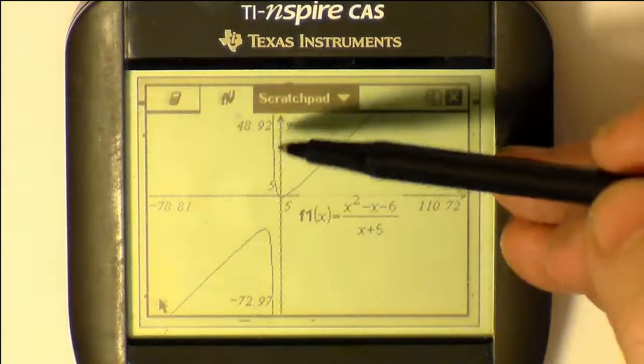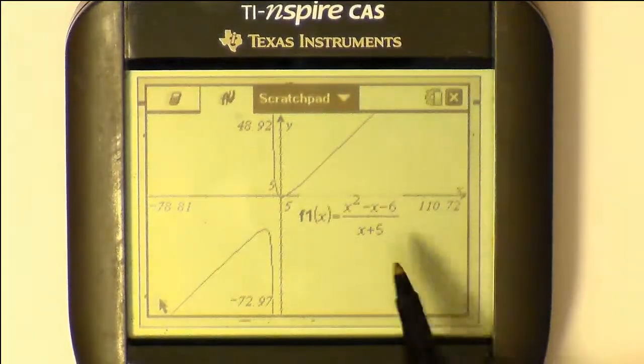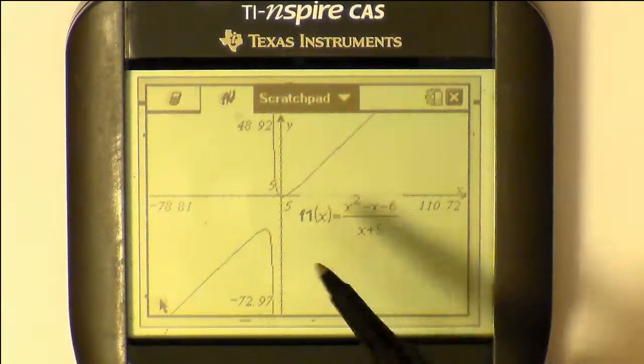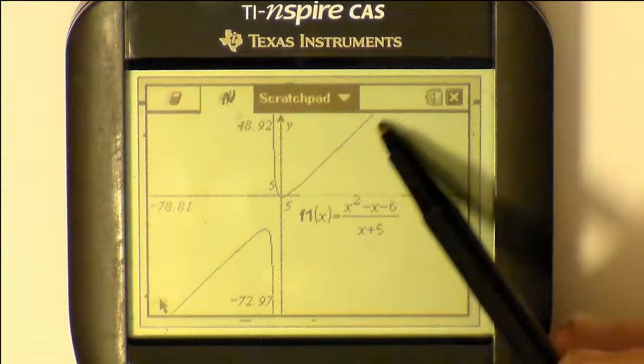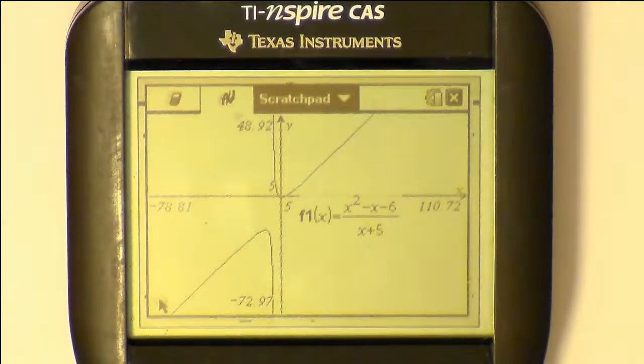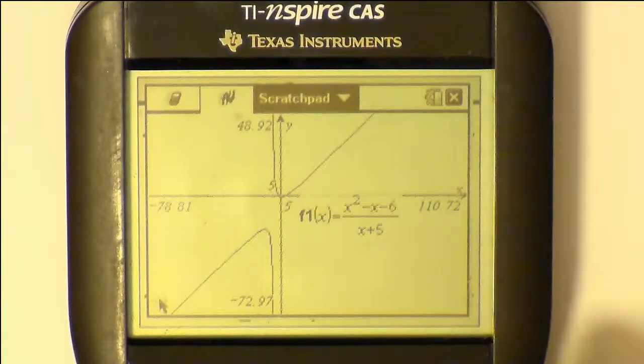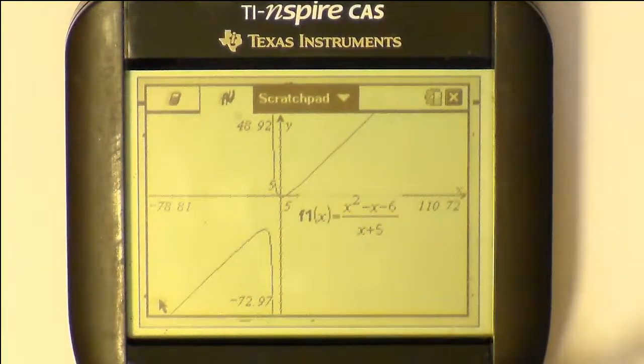So notice that we have x plus 5 as the vertical asymptote exactly where we expect it. And that's because x plus 5 is on the bottom. So negative 5 is the vertical asymptote. But we've got this mysterious linear asymptote. It looks like it's on some kind of a slanty line. That's called an oblique asymptote.